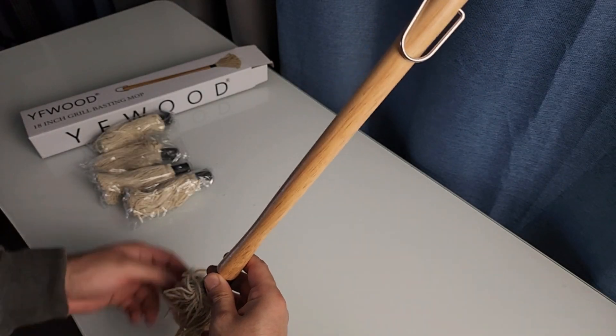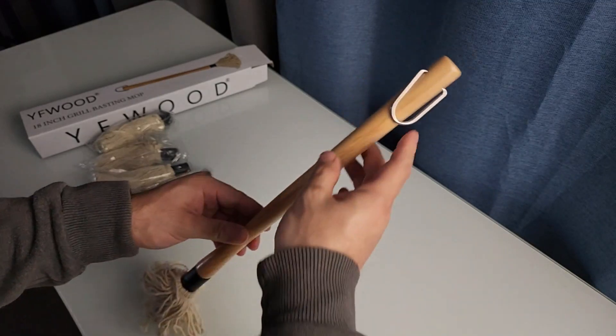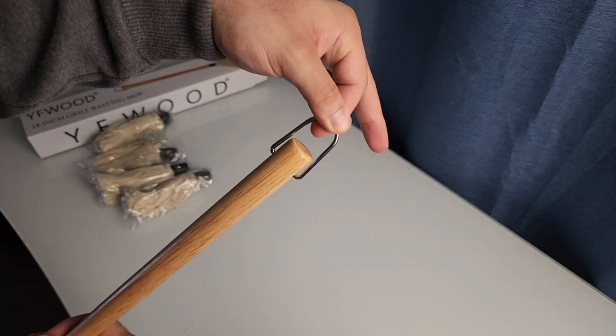Right here we have this 18-inch grill basting mop. You're going to have a nice little hook if you want to hang it on something right there, you can see that right there.